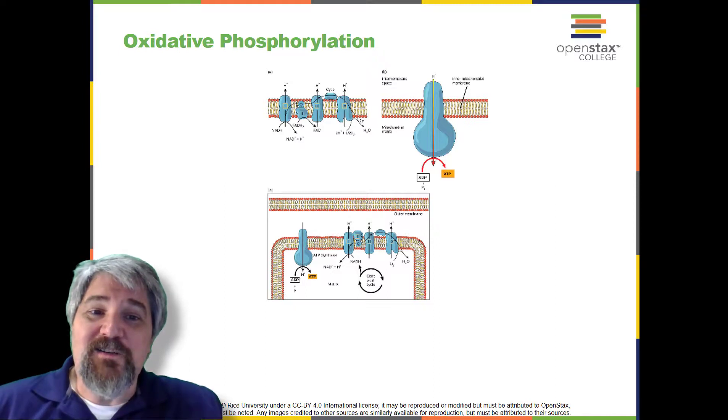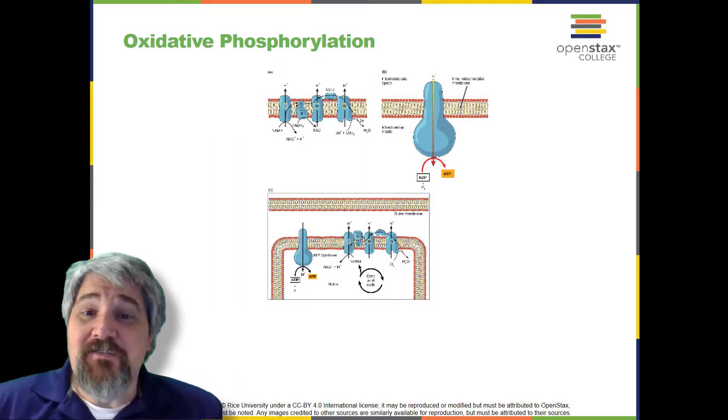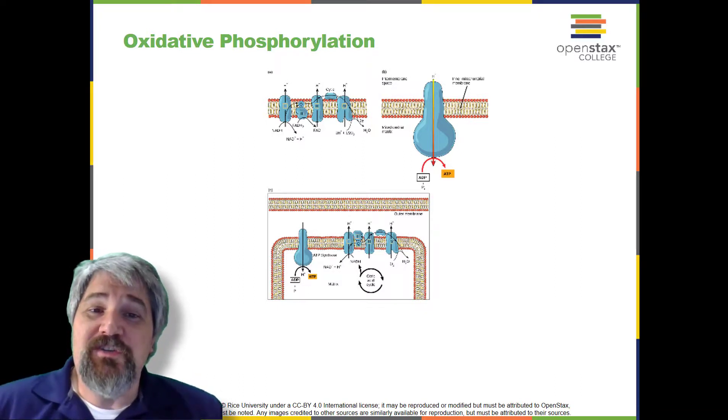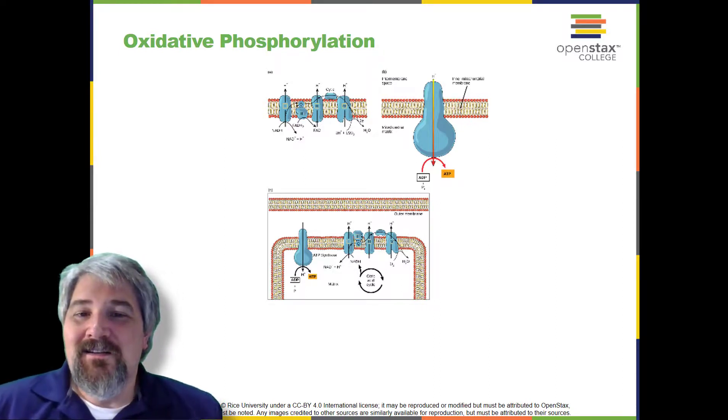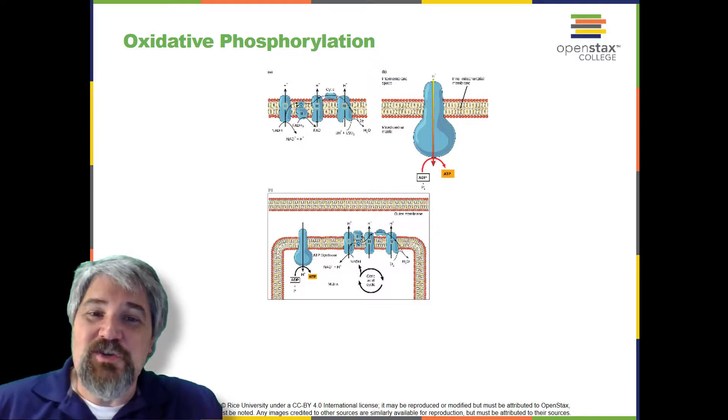These reactions take place in specialized protein complexes located in the inner membrane of the mitochondria of eukaryotic organisms and on the inner part of the cell membrane of prokaryotic organisms. The energy of the electrons is harvested and used to generate an electrochemical gradient across the inner mitochondrial membrane. The potential energy of this gradient is used to generate ATP. The entirety of this process is called oxidative phosphorylation.